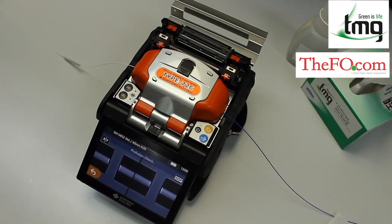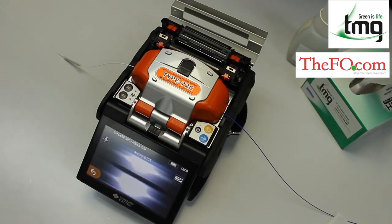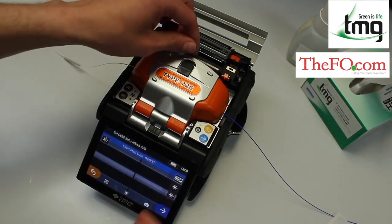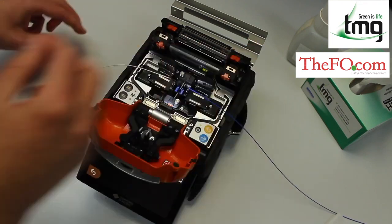The splicer will jump straight in to do a very quick arc test. Once that's complete there will be no pause, it will jump straight in to do the splice if everything is okay. And it will do a quick strain test to make sure the fiber holds correctly.